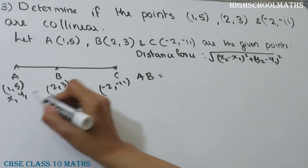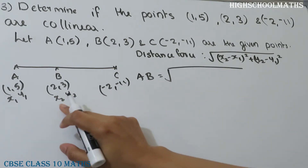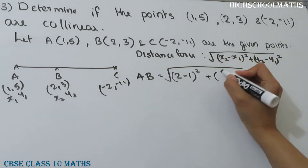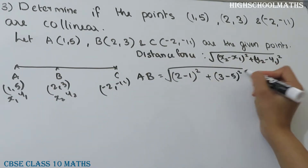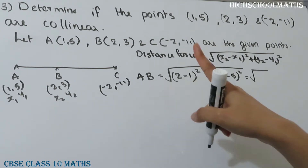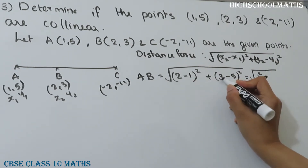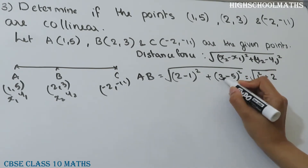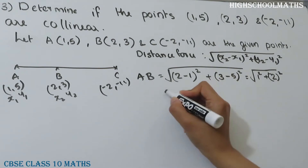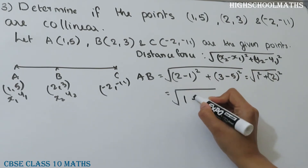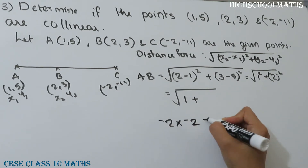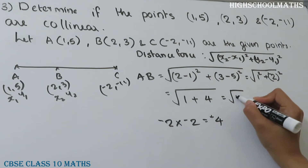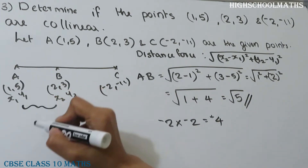AB: A is (1,5), so x1=1, y1=5; B is (2,3), so x2=2, y2=3. AB equals the square root of (2-1) squared plus (3-5) squared, which is the square root of 1 plus 4, equals the square root of 5. So AB equals root 5.